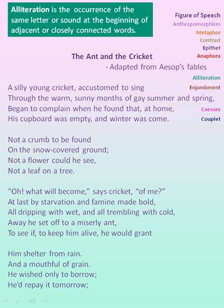Now let us quickly see the words of alliteration. Alliteration is the occurrence of the same letter or sound at the beginning of adjacent or closely connected words — it begins with consonant sound words. So in the first line, silly and sing are alliterated words. Sunny, summer, spring are the alliterated words in the second line.